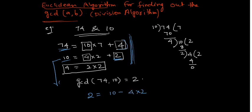Now this 4 I can write, this 4 I can write as 74 minus 10 into 7, into 2. So now you see, this equals 10 into, so 7 into 2 is 14, so 10 into 15 minus 74 into 2. You see that they are the same.